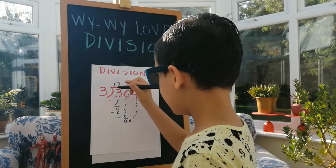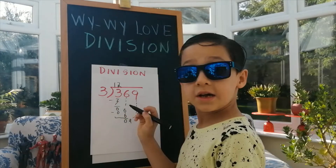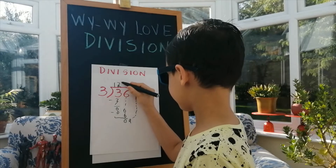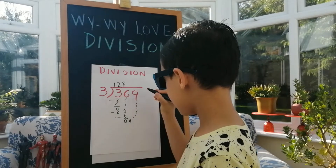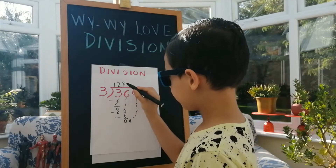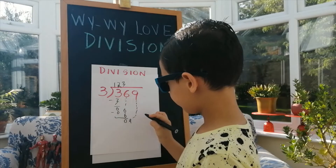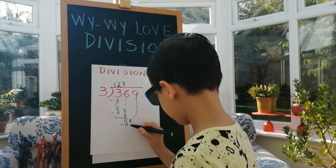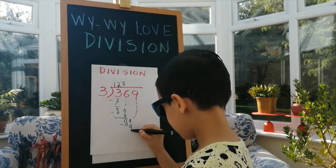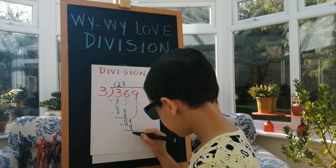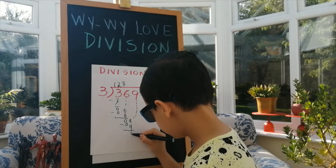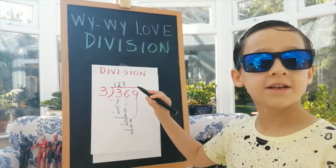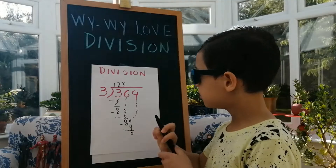9. And how many 3's are in 9? That is 3. 3 times 3 is 9, minus 9 equals 0. So the answer is 123.